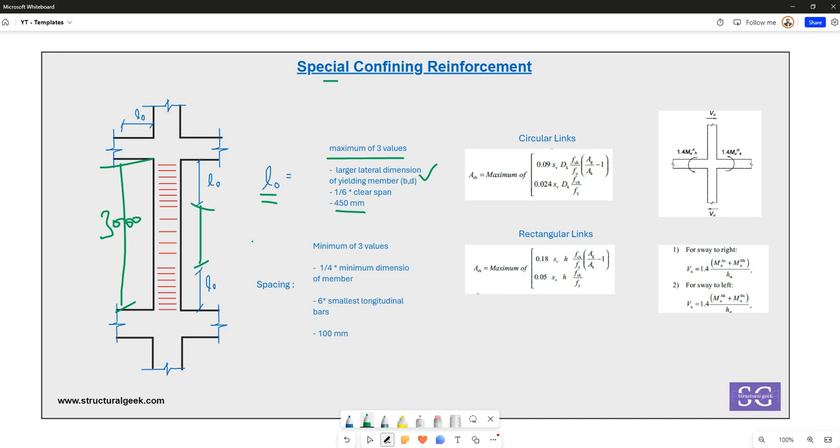Now, what should be the spacing of special confining reinforcement in that area L0? It should be the minimum of these three values. It should be one-fourth of the minimum dimension of the member, so the minimum of B or D.